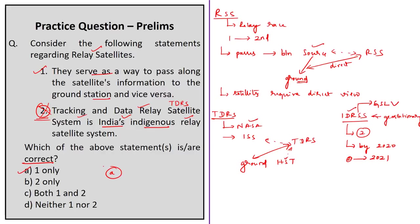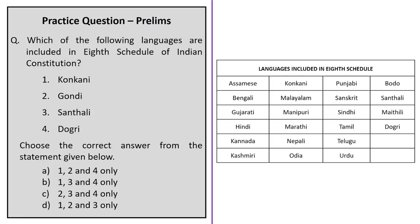This question is based on the Eighth Schedule of the Indian Constitution. The given languages are Konkani, Gondi, Santali, and Dogri, and you have to choose which are included in the Eighth Schedule. In the original constitution, 14 languages were included. Then in 1967, Sindhi was included. Then in 1992, three more languages — Konkani, Manipuri, and Nepali — were included. Again in 2004, four more languages — Bodo, Dogri, Maithali, and Santali — were included. So Gondi is not included in the Eighth Schedule, and therefore option B — 1, 3, 4 only — is the correct option.